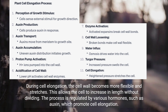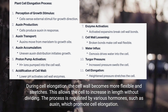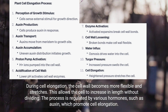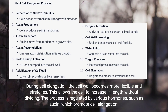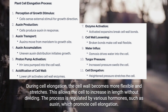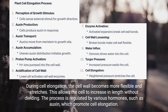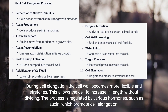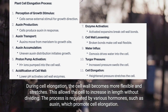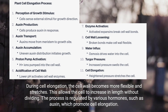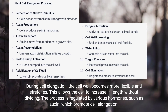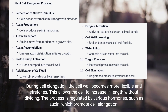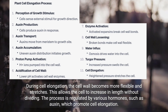During cell elongation, the cell wall becomes more flexible and stretches. This allows the cell to increase in length without dividing. The process is regulated by various hormones, such as auxin, which promotes cell elongation.